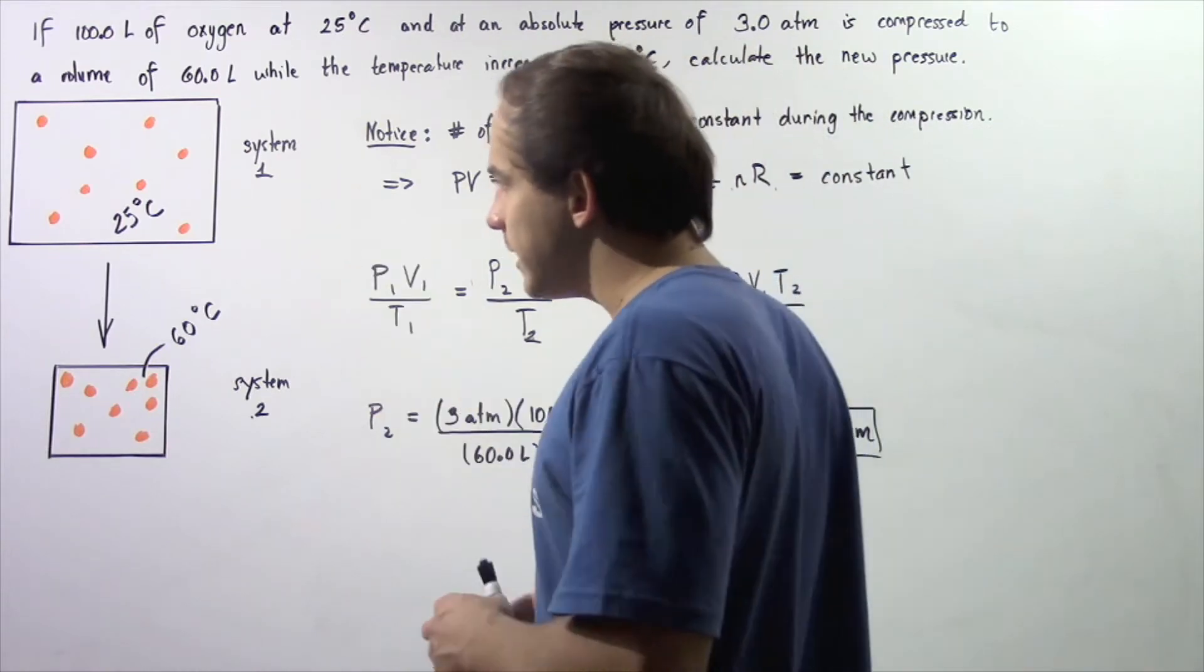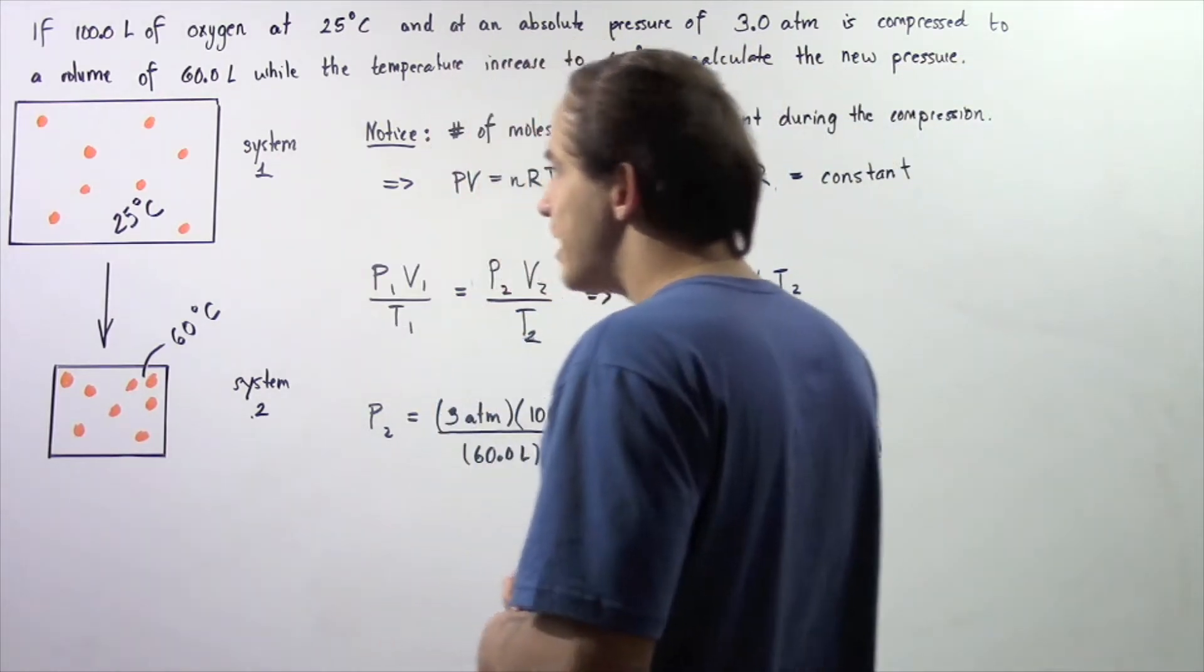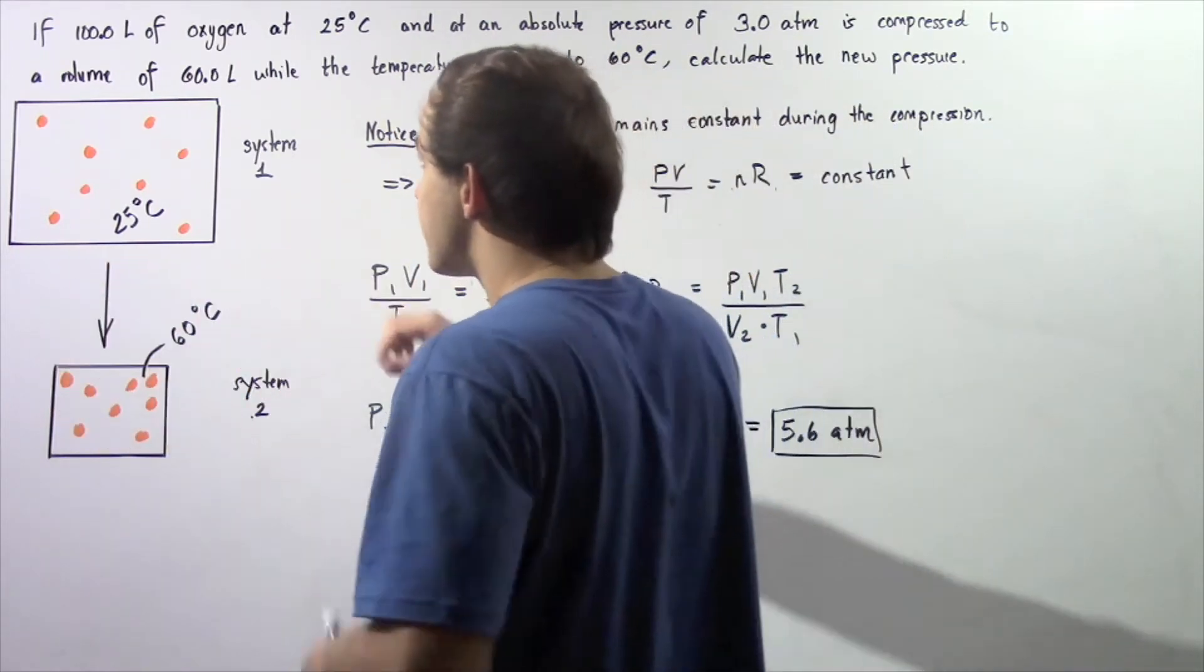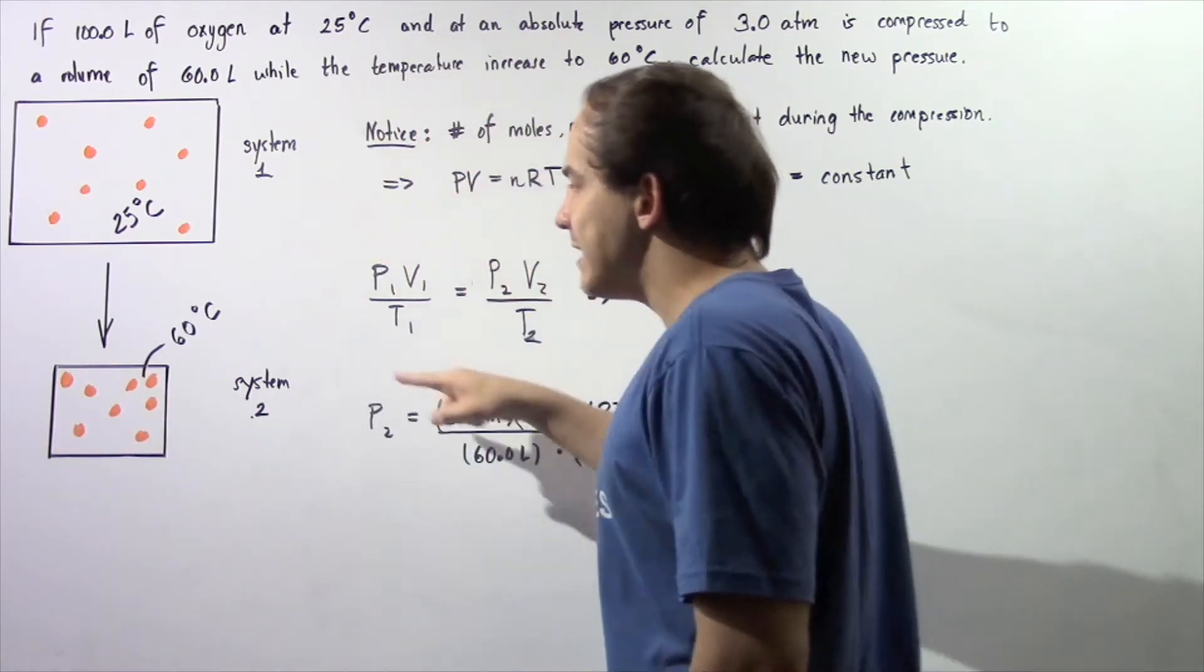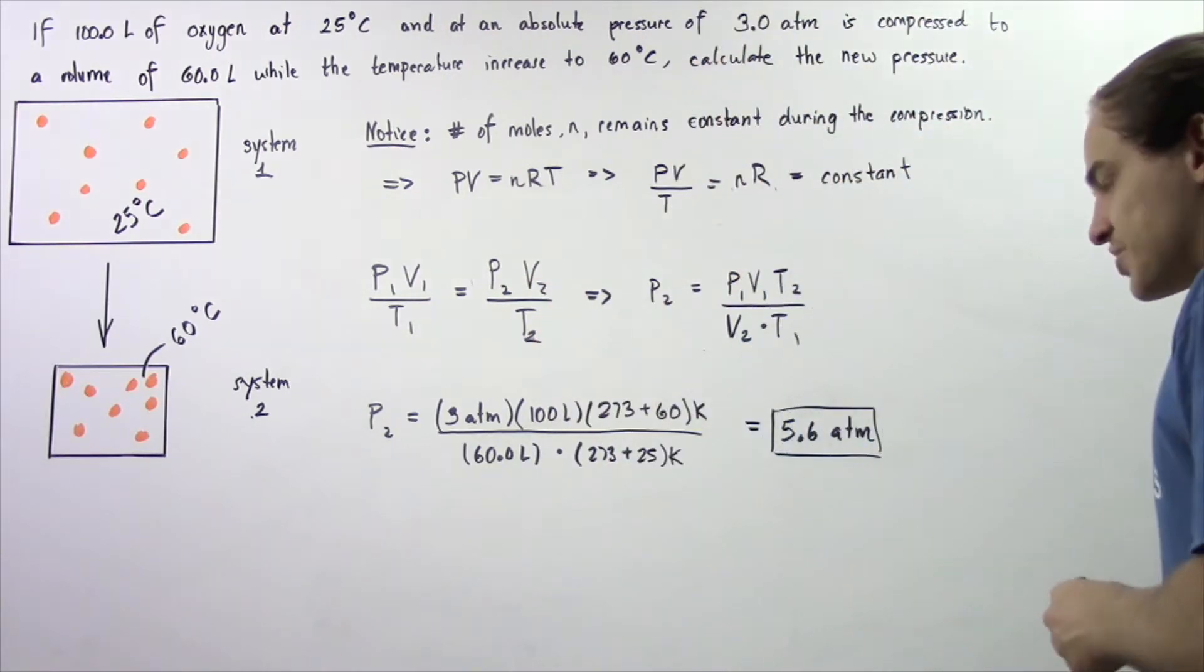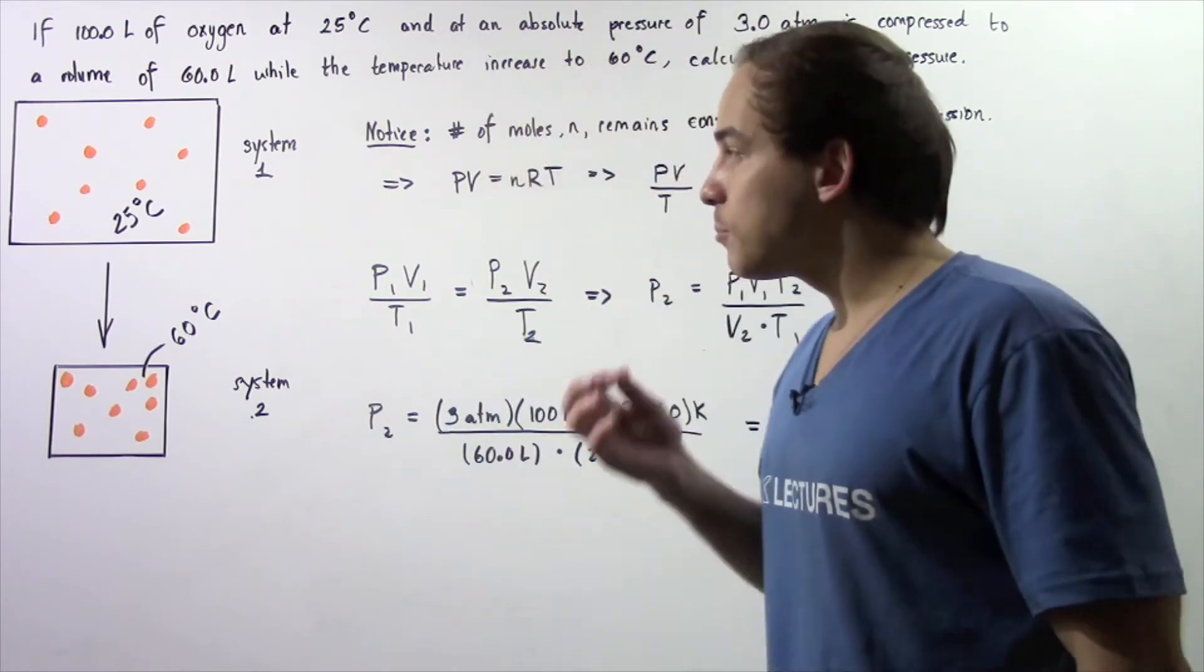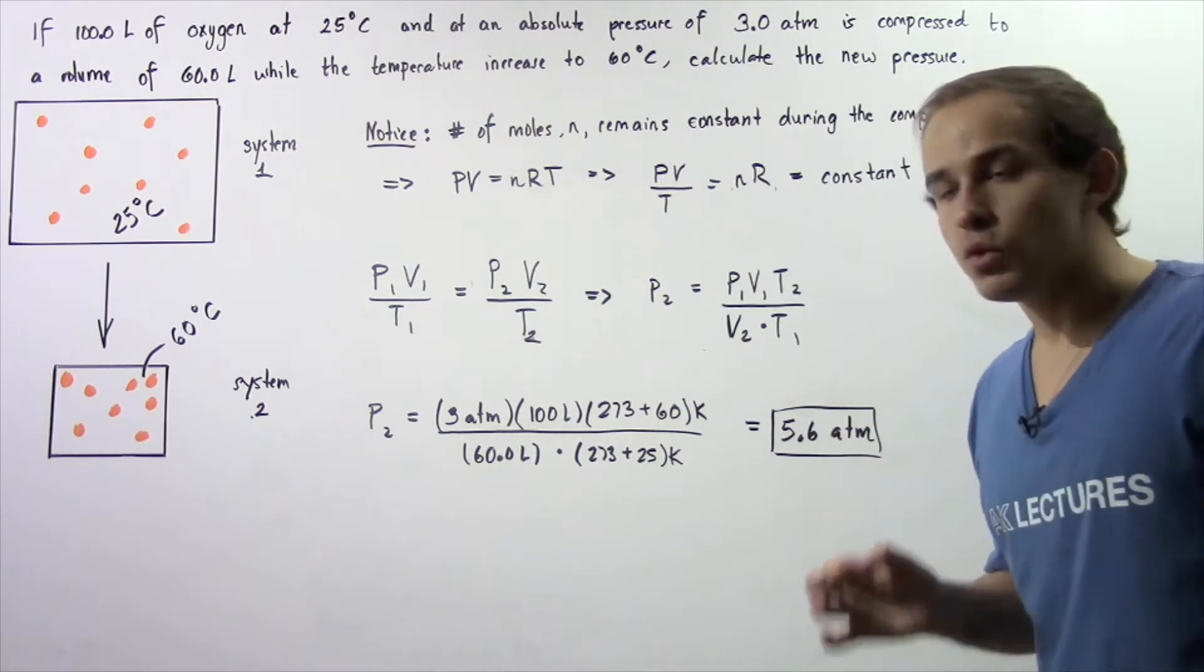Let's begin by looking at our two diagrams. We have system number one that is at 25 degrees Celsius, compressed from 100 liters to 60 liters, and there is an increase in temperature that increases to 60 degrees Celsius. So what is the new pressure of our system? Well the pressure has to increase, but what exactly is the value?